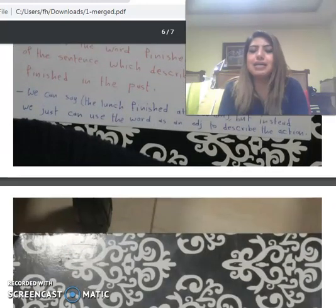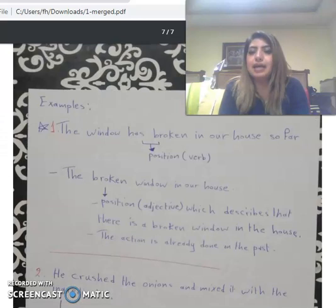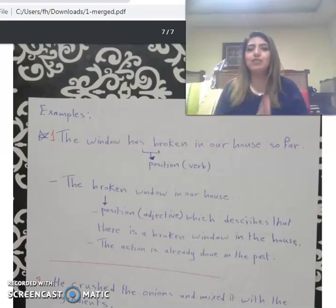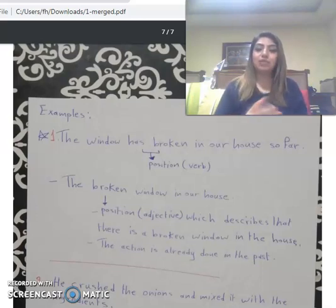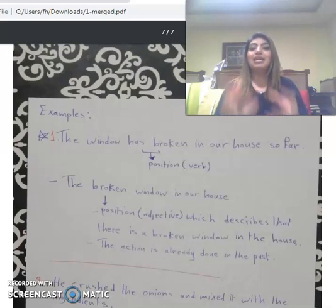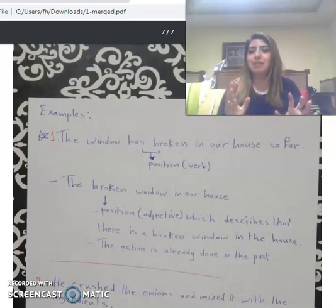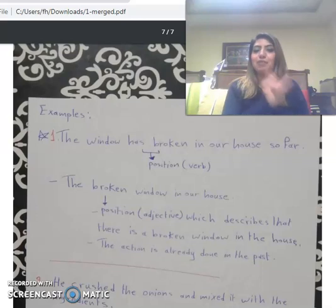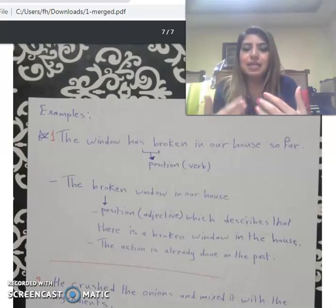هون أنا بوصفها فقط، بعطيها صفة. إذا ما بروح بحكي خلص الغداء على الساعة الفلانية، لأن هاد الحكي صار في الماضي وخلصنا. فلما أستخدم صفة بستخدم كلمة 'finish' اللي موجودة بال past participle. الحدث الأساسي صار بزمن الماضي، لكن أنا بستخدمها كصفة وليس كفعل — فقط بوصف إنه الحدث صار بالماضي وبحطها كـ adjective.